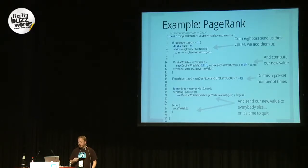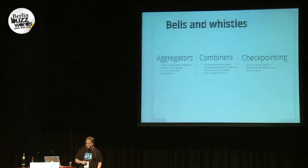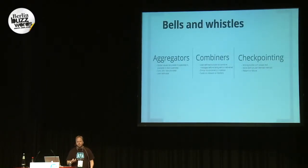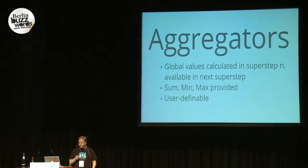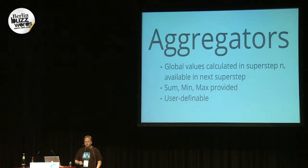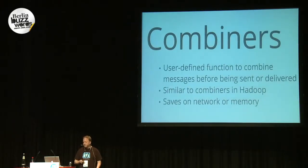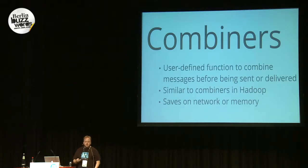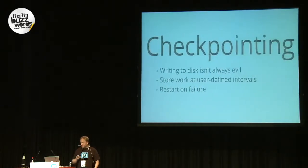We're a new project but we already have some bells and whistles. One is aggregators — unlike in MapReduce, we can have global state. Aggregators can be a value that's true across the whole graph. You can have a sum, where everybody contributes a number and in the next super step you get the sum; minimum value, max value; or you can define your own. Additionally, we have combiners, very similar to MapReduce combiners — if you're going to send out a certain number of messages, you can provide an optional function that transforms them into a smaller number of messages, saving network time.